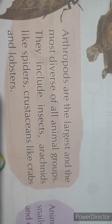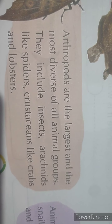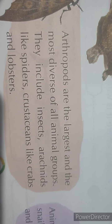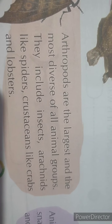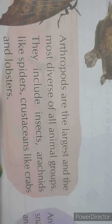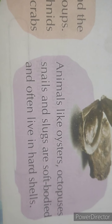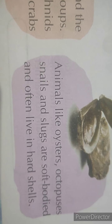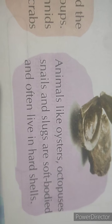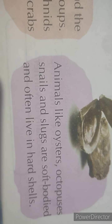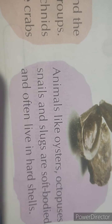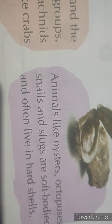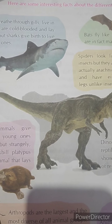Arthropods are the largest and most diverse of all animal groups. They include insects, arachnids like spiders, and crustaceans like crabs and lobsters. Animals like oysters, octopus, snails, and slugs are soft-bodied and often live in a hard shell.